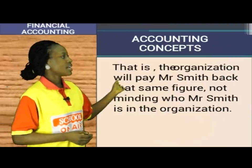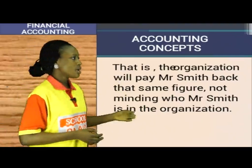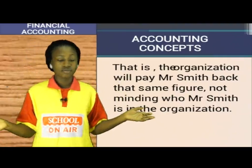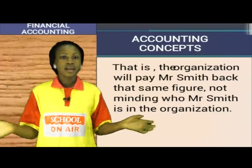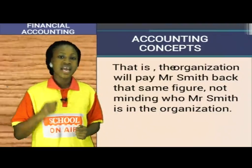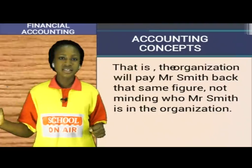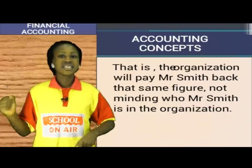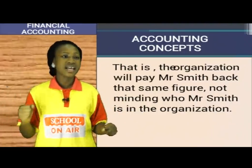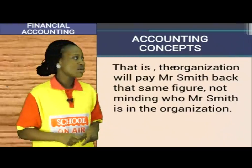The organization will pay Mr. Smith back that same figure, not minding who Mr. Smith is in the organization — whether he is the general manager or whoever. Mr. Smith is an entity on his own and the business is an entity on its own. The business is borrowing money from Mr. Smith, and that money should be paid back. That is what we are calling entity concept.